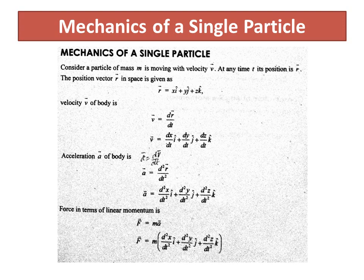If we look at the mechanism of a single particle, the position vector r equals x-i plus y-j plus z-k. If v is the velocity of that body, then the differential equation dr over dt gives us the velocity in terms of position vector. In Cartesian components, v equals dx/dt i plus dy/dt j plus dz/dt k, where i, j, k are unit vectors along the x, y, and z axes.